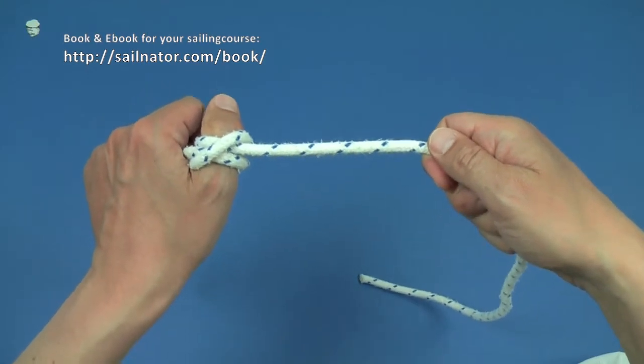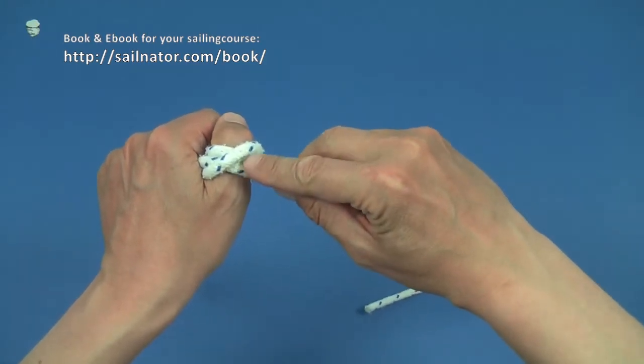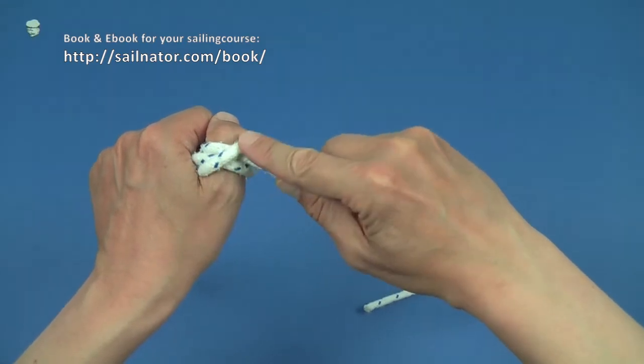From the side we see again two parallel lines crossed by one line. The thrown clove hitch is finished.